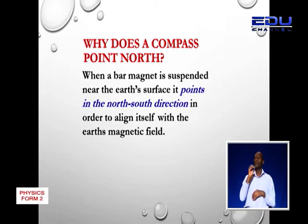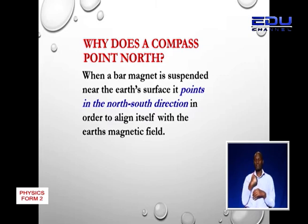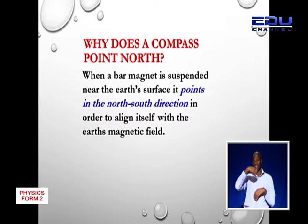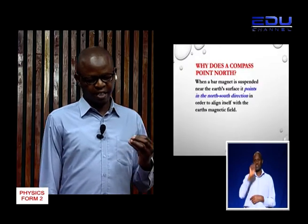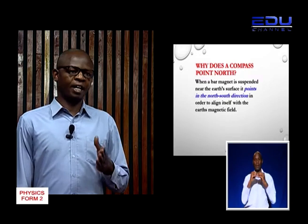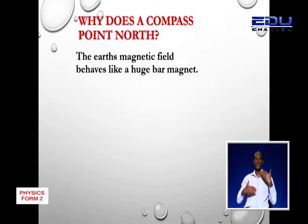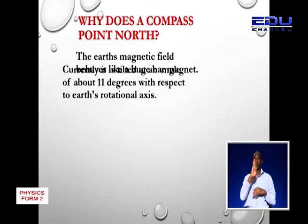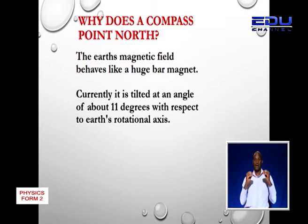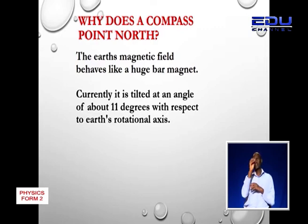So why does a compass always point to the north? All magnets have a directional property — when a magnet is suspended near the earth's surface, it points in the north-south direction in order to align itself with the earth's magnetic field. The earth's magnetic field actually behaves like a huge bar magnet, and the magnetic field is currently tilted at an angle of about 11 degrees with respect to the earth's rotational axis.